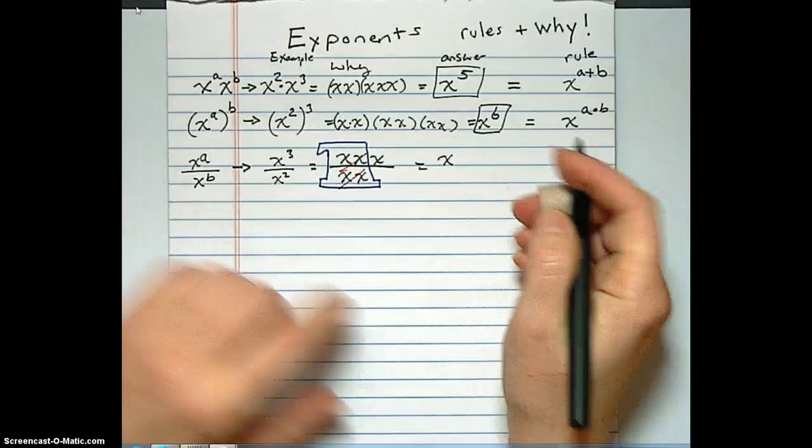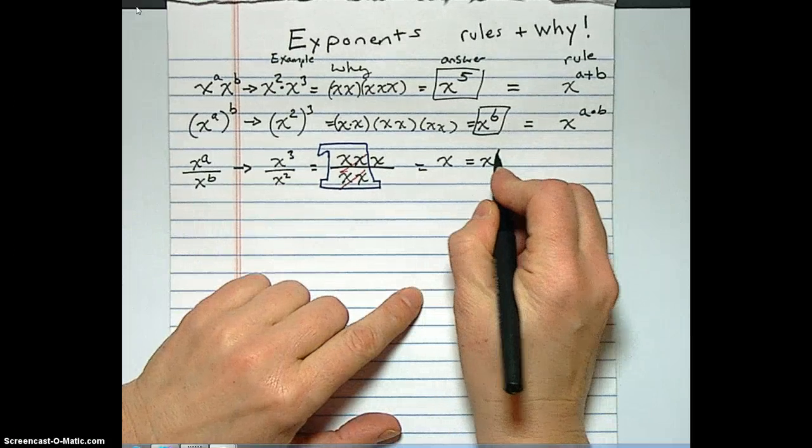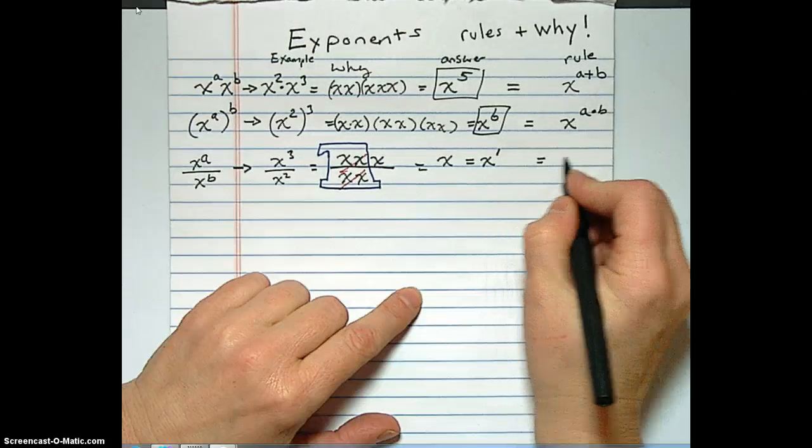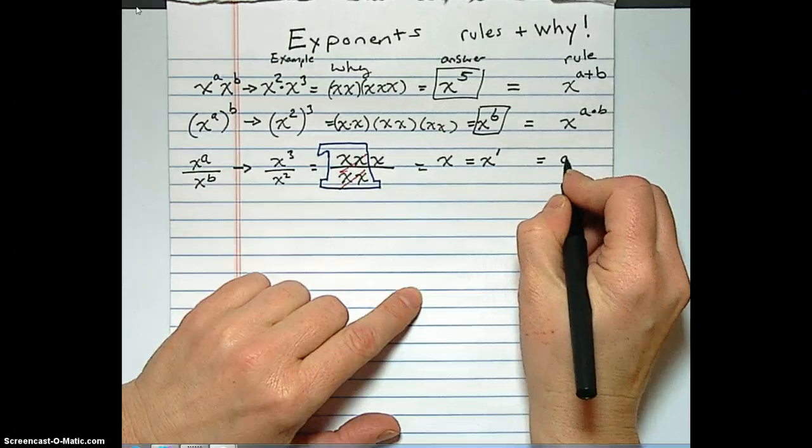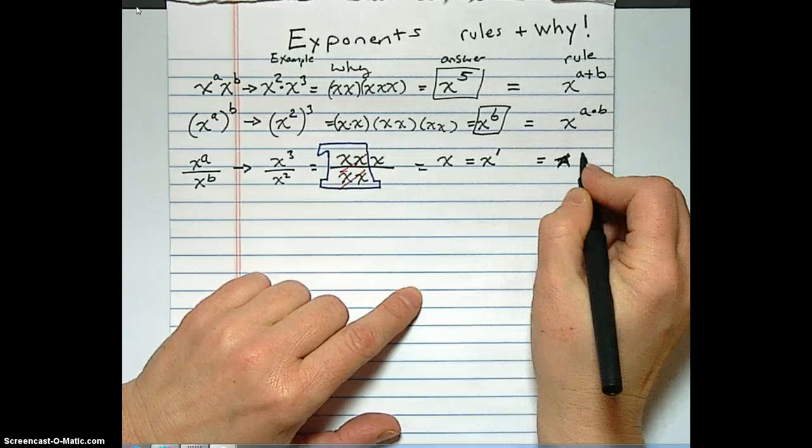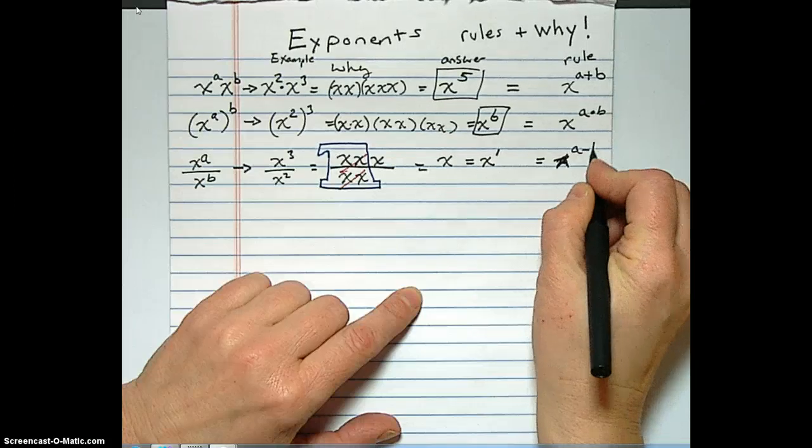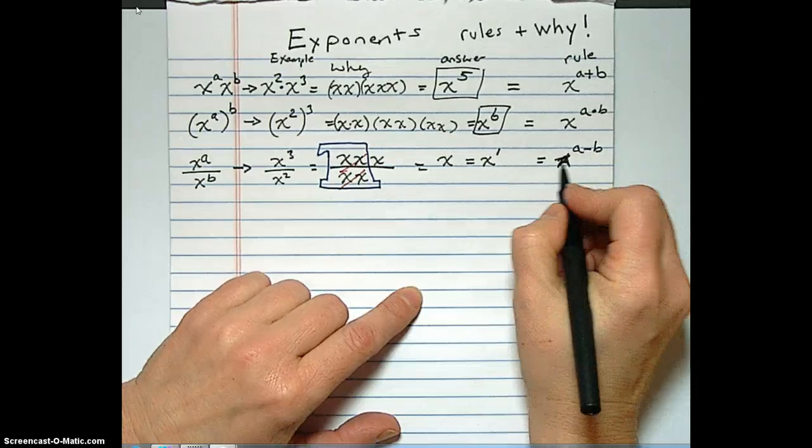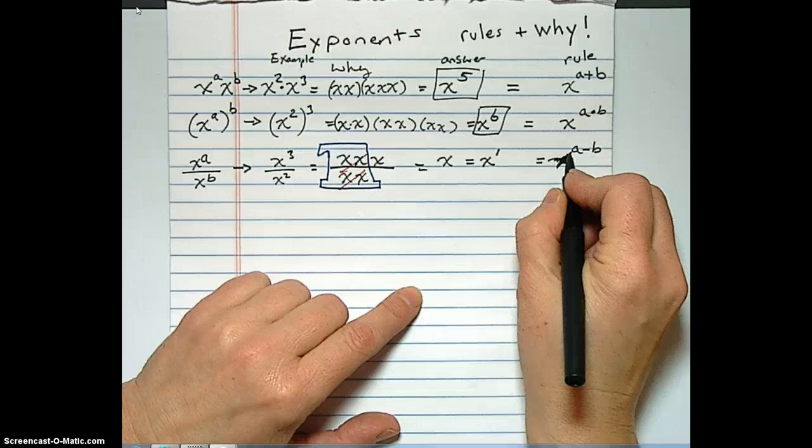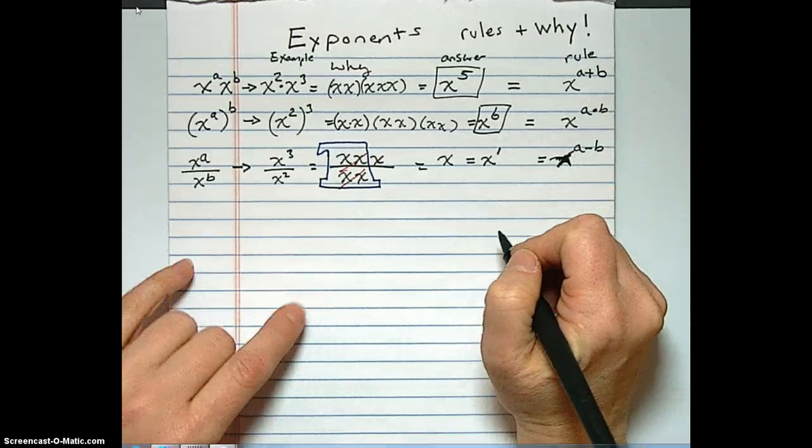All right, okay, so x is the same thing as x to the first power. And the rule here that a lot of people have memorized is x to the a minus b. Can you tell that's an x? I hope so. X, how that, we made it bigger, x to the a minus b.